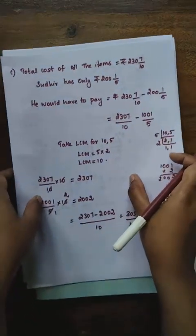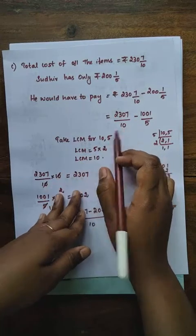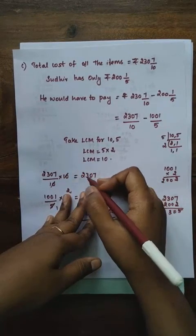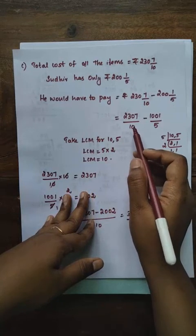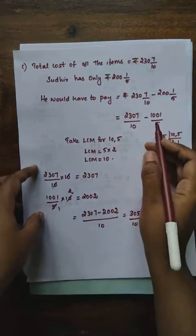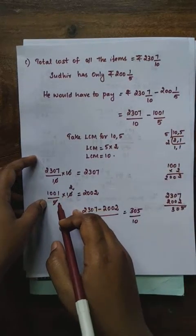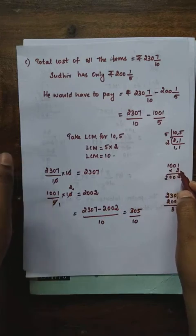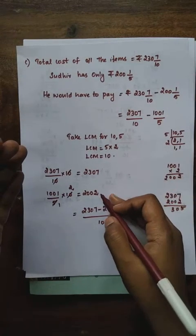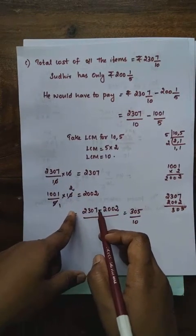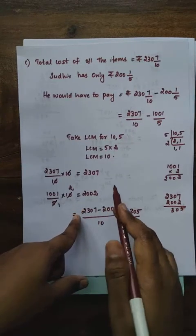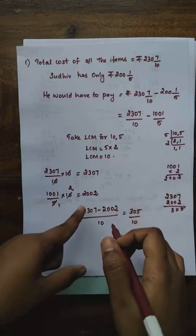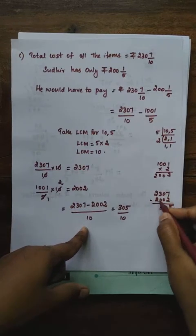For 2307/10: denominator is already 10, so numerator stays 2307. For 1001/5: multiply by LCM 10. In 5 table, 2×5 is 10, so multiply 1001 by 2. 1001 × 2 = 2002. Now we have 2307 minus 2002, divided by 10. Subtracting: 2307 − 2002 = 305. So we get 305/10.